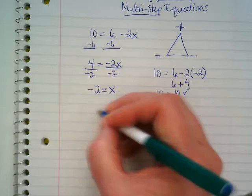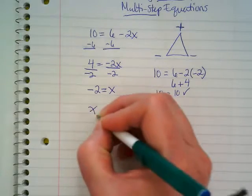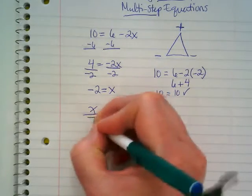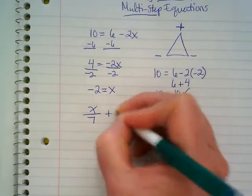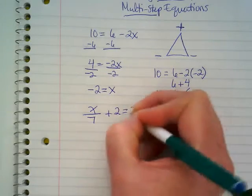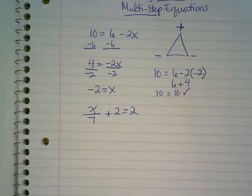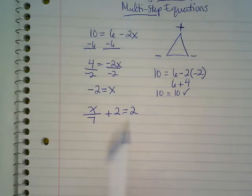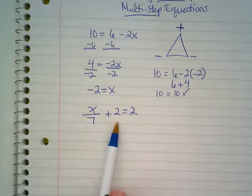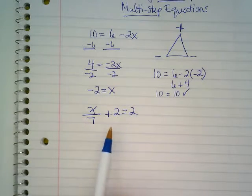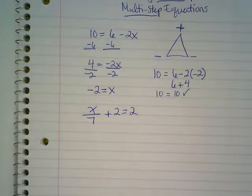Let's try one that has division in it to begin with. We're going to do x over 7 plus 2 equals 2. Again, we see division, but we also see addition. And when we have multi-step problems, we want to get rid of the numbers that are not with the variable first, and then deal with the number that's attached to the variable.